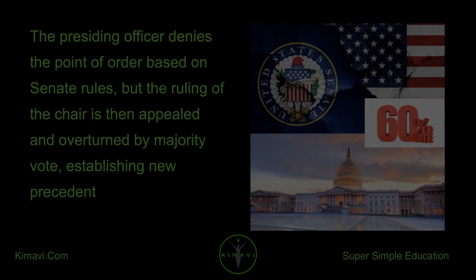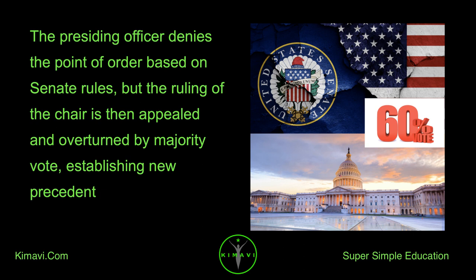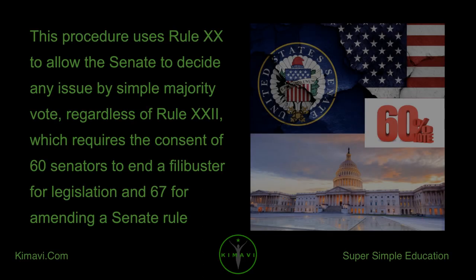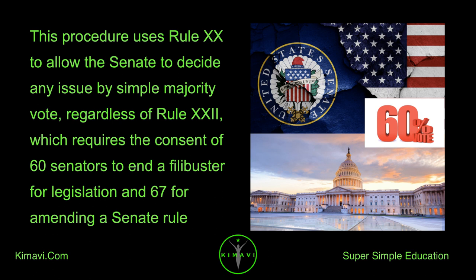The presiding officer denies the point of order based on Senate rules, but the ruling of the chair is then appealed and overturned by majority vote, establishing new precedent. This procedure uses Rule XXX to allow the Senate to decide any issue by simple majority vote, regardless of Rule XXII, which requires the consent of 60 senators to end a filibuster for legislation, and 67 for amending a Senate rule.